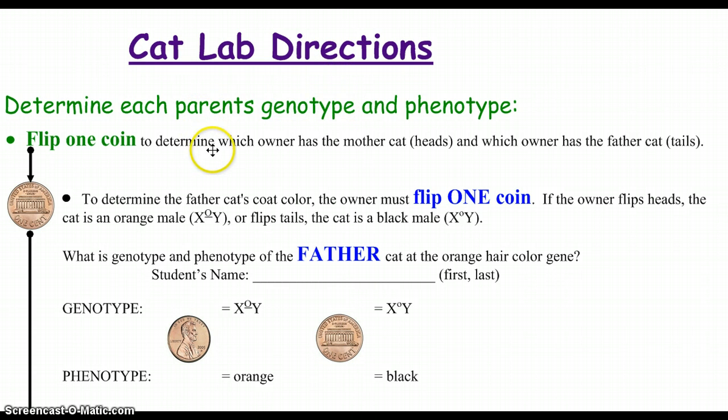Be looking at your table as we go through this, so if you need to make yourself any notes, you can. First thing you're going to do is you'll find a partner, and then you'll determine who's going to be the mother and who's going to be the father cat. You can either flip a coin or just decide, it does not really matter.